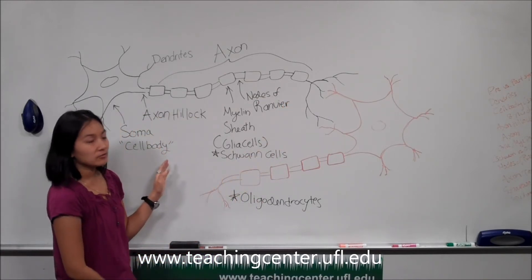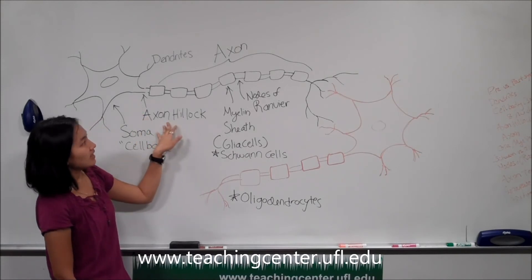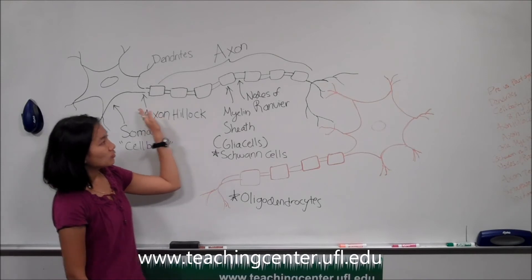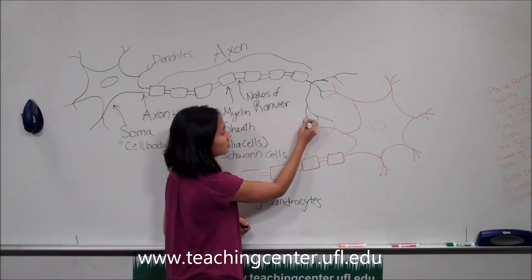All right, so you have your action potential generated from the axon hillock through the axon and it ends at these axon terminals.